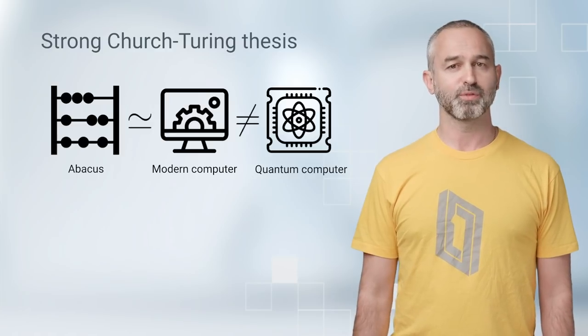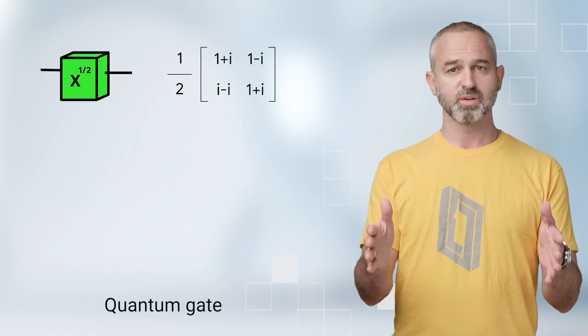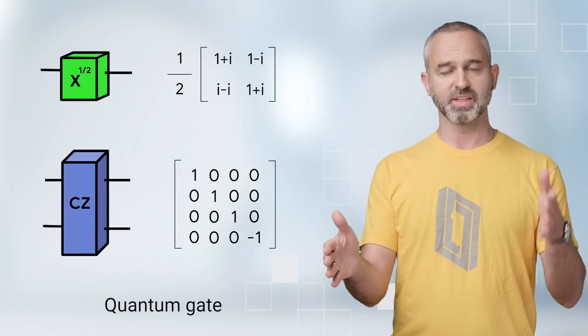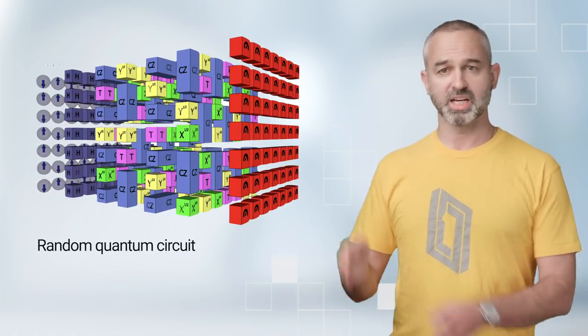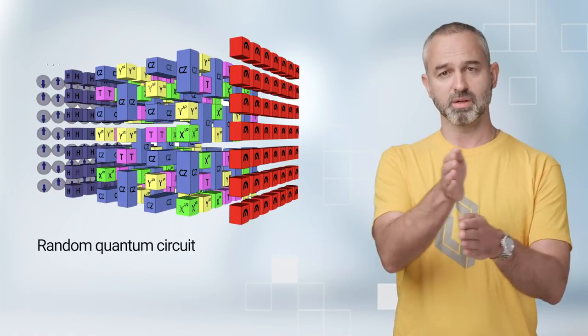You can think of a qubit as an arrow pointing to some direction of a sphere. Quantum gates are operations on qubits. Similar to classical gates, we often depict quantum gates as boxes, with the input on one side and the output on the opposite side. In a quantum circuit, we apply layers of gates, one per clock cycle.